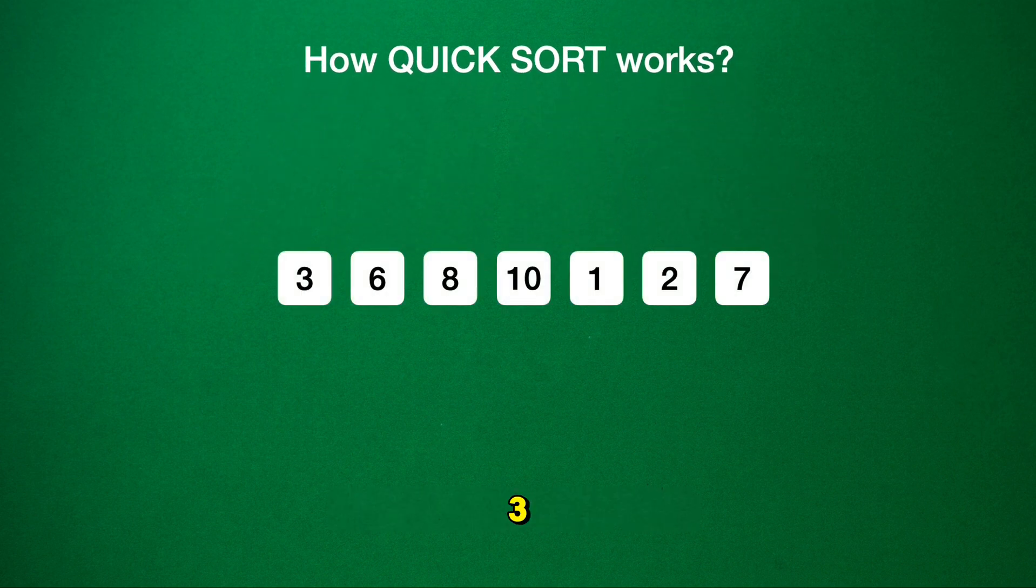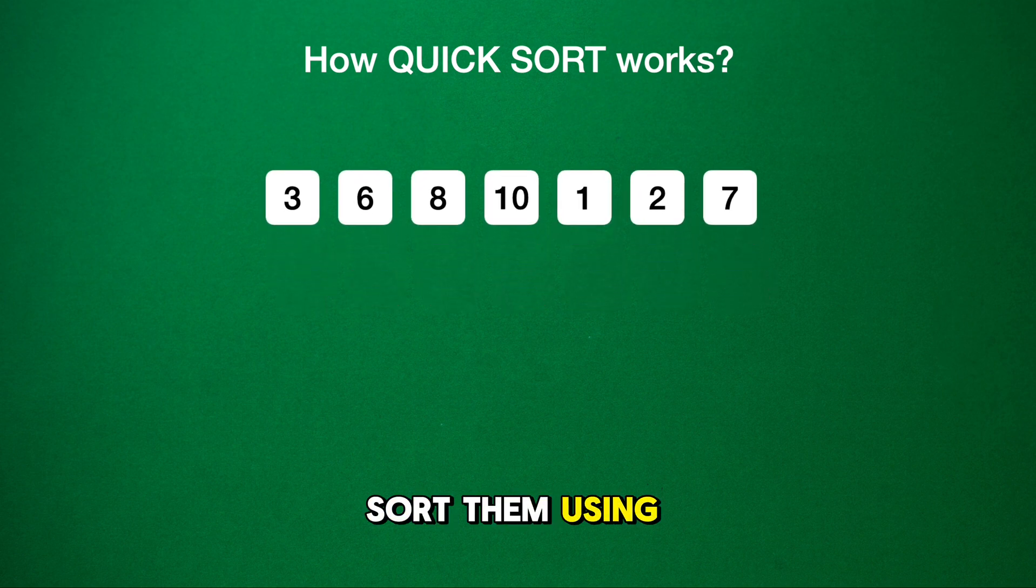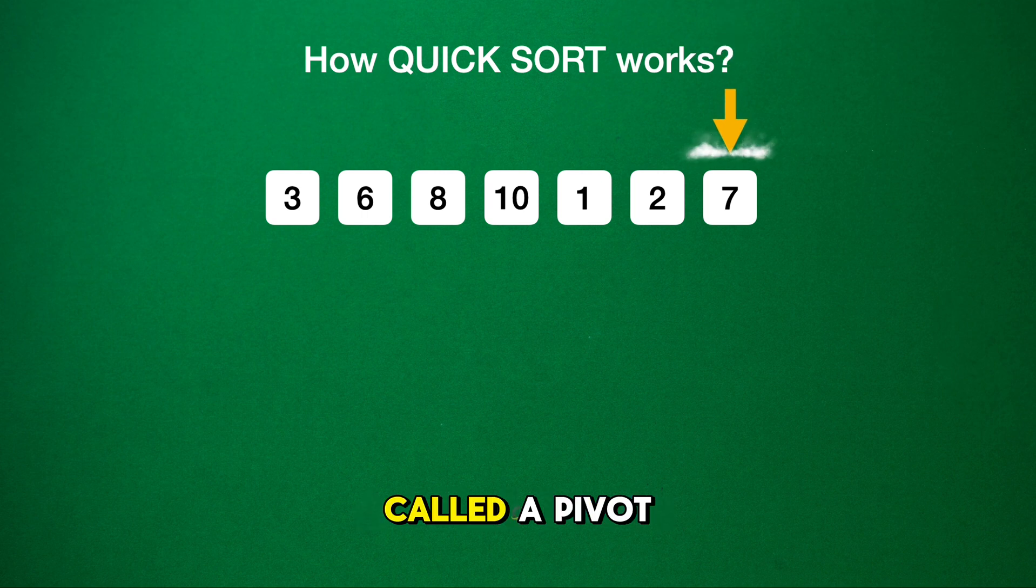Let's say we have these numbers: 3, 6, 8, 10, 1, 2, 7. We want to sort them using quicksort. First, we pick a special number called a pivot. Let's choose 7 for now.